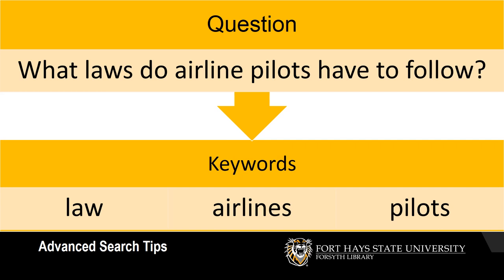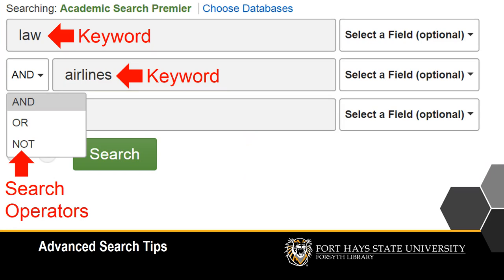Keywords can actually be one to three words, but they are short and we combine them using something called search operators. Boolean searching uses three search operator words: AND, OR, and NOT.